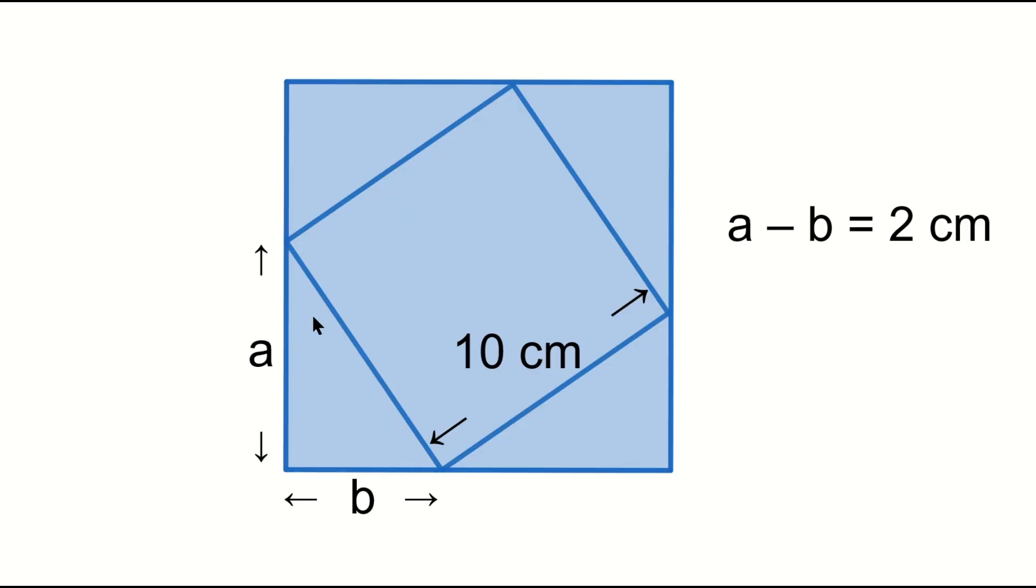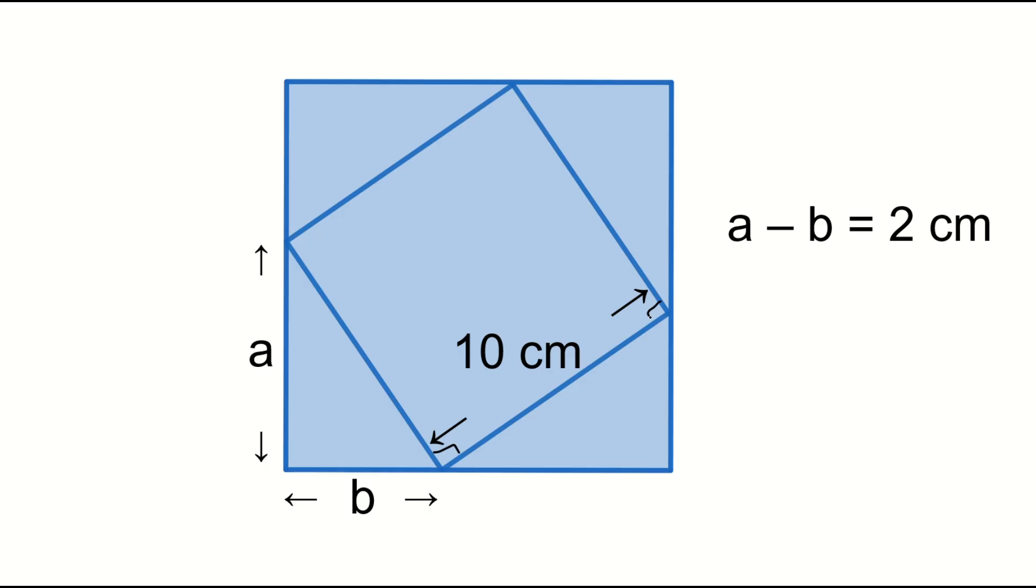At first, these four triangles are congruent. Why? This angle is 90 degrees. This angle represents as a circle, and this angle as a triangle. A circle plus a triangle equals 90 degrees. So, this angle is a circle, and this angle is a triangle. Similarly, this angle is a circle and this angle is a triangle.